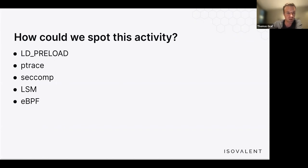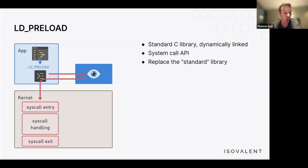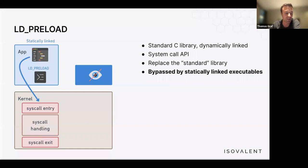Existing approaches include LD preload, ptrace, seccomp, LSM, eBPF LSM, and other eBPF-based security methods. LD preload — one of the oldest approaches — loads a library into an application without code changes, essentially proxying system calls through that library. However, it can be bypassed: if the application binary is statically linked, LD preload has no effect and all visibility and enforcement is lost. So this approach has largely been abandoned.